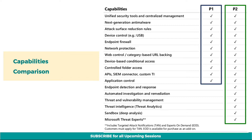Network protection for a variety of platforms, including Windows, macOS, iOS, and Android devices, is available in both plans. Web control and category-based URL blocking is available in both plans. Device-based conditional access is also available in both plans. Integration capabilities using API, SIEM connector, or a custom threat Intel integration, is available in both plans.